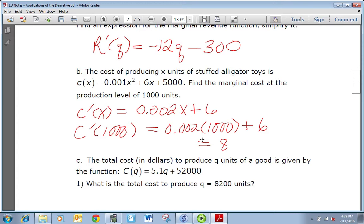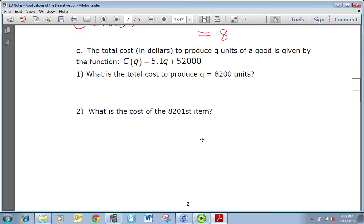Part c: the total costs in dollars to produce q units is given by the function C(q) = 5.1q + 52,000. What is the total cost to produce q = 8200 units? That's just a matter of plugging in 8200 into the function because it's not asking for marginal, it's asking for total. So 5.1 times 8200 plus 52,000, and if we do our arithmetic correctly there we should get 93,820.